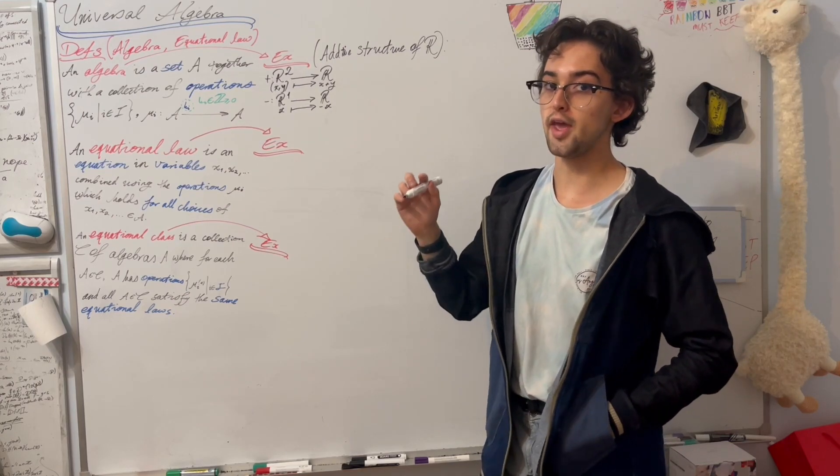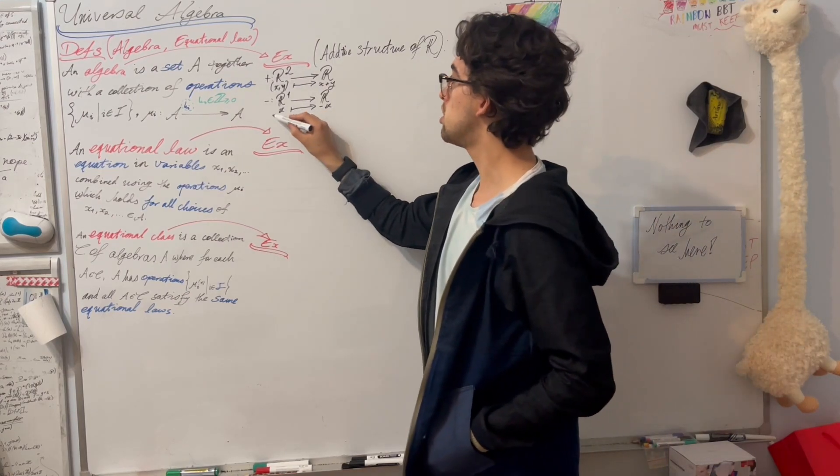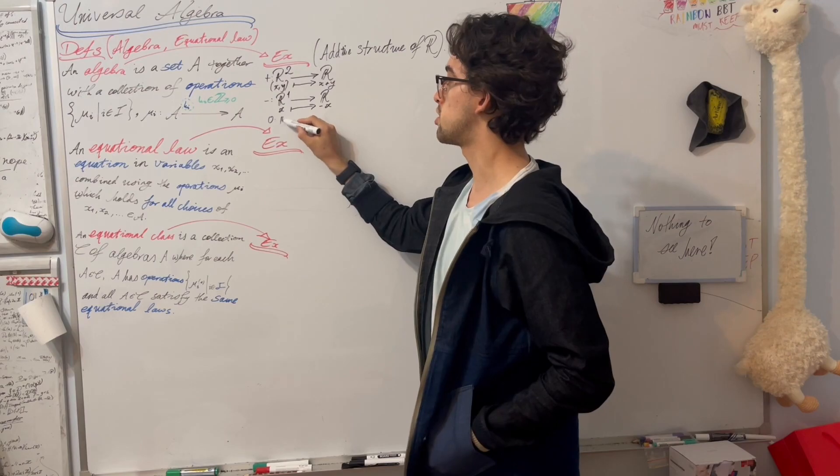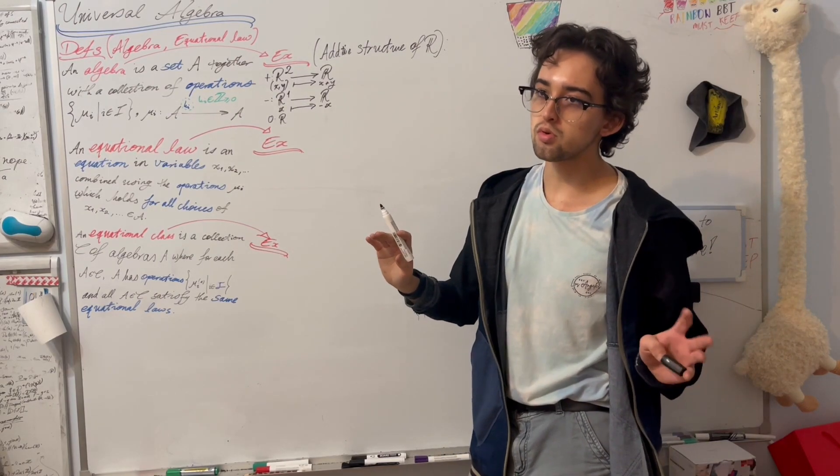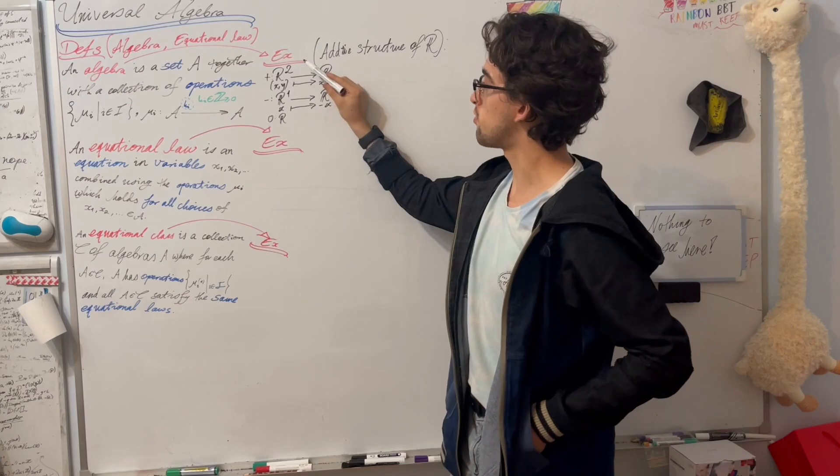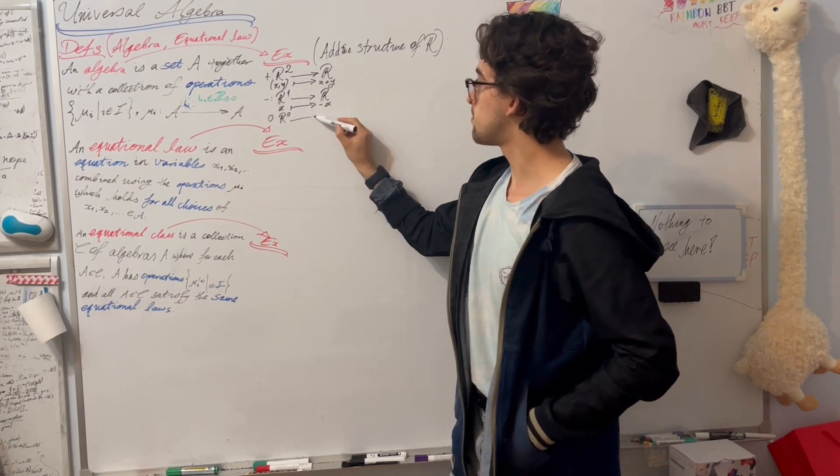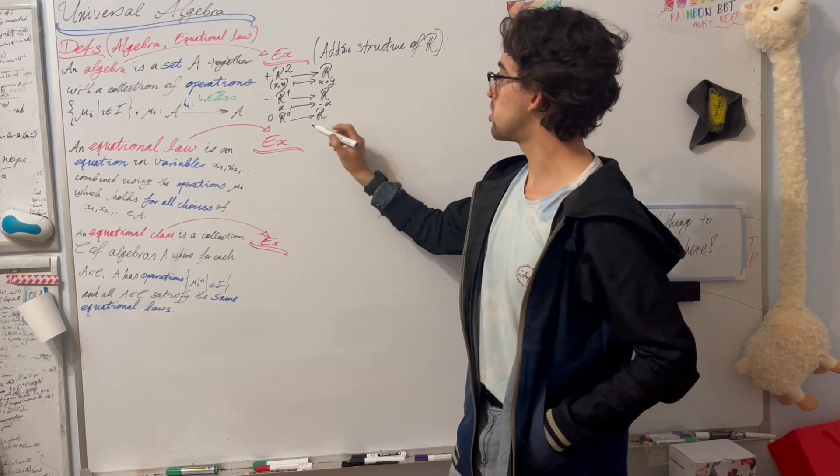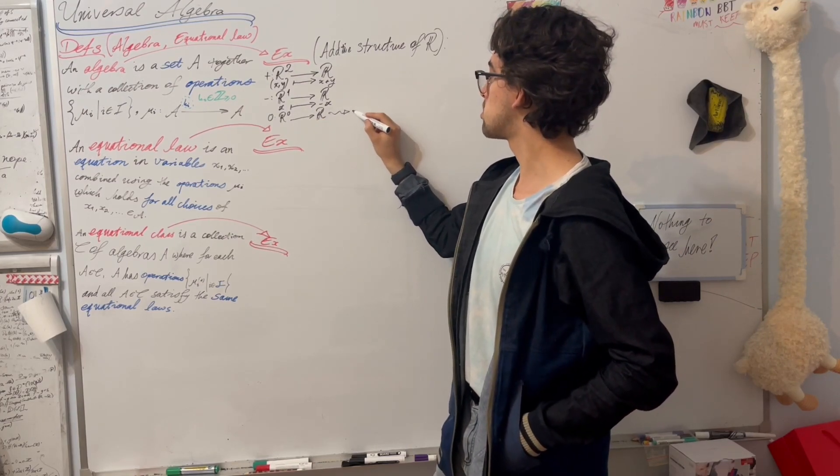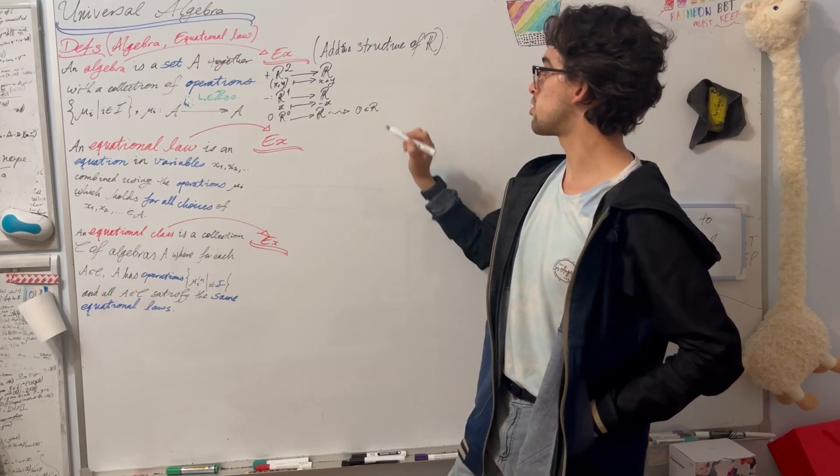Last but certainly not least, we have something special called a nullary operation. That one is going to be denoted with zero. We can think of it loosely as a function not on R^2, not on R^1, but on R^0. And what it does is it corresponds to the element 0 as a real number.